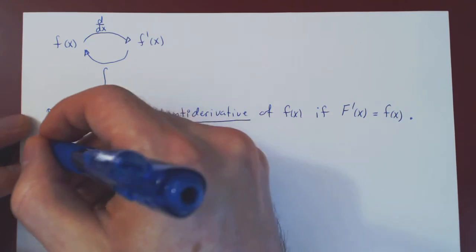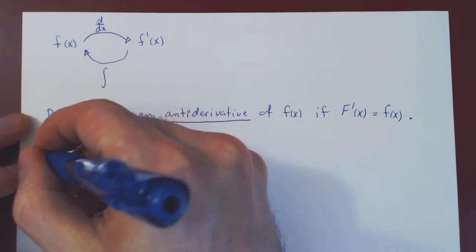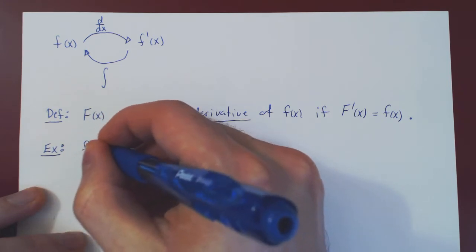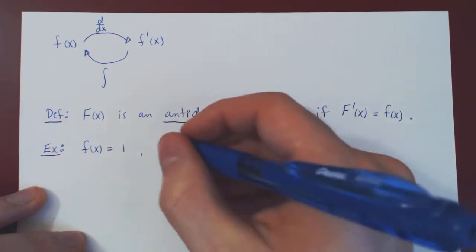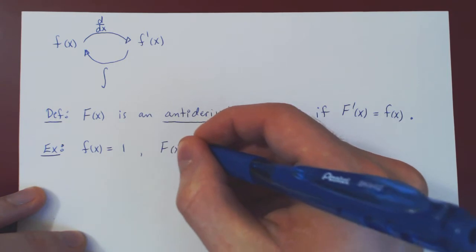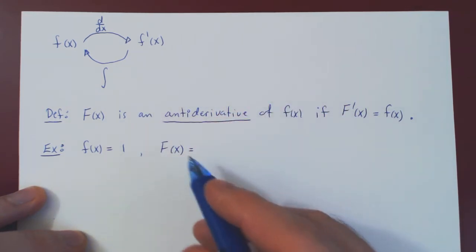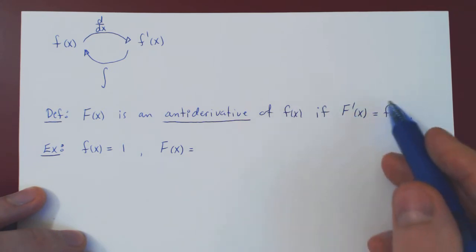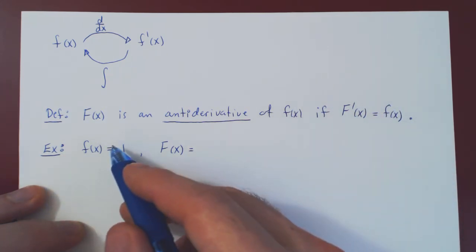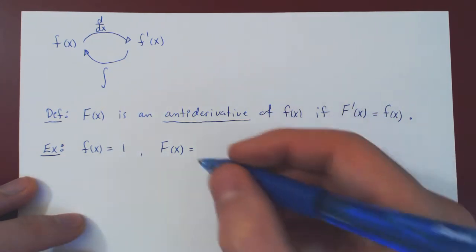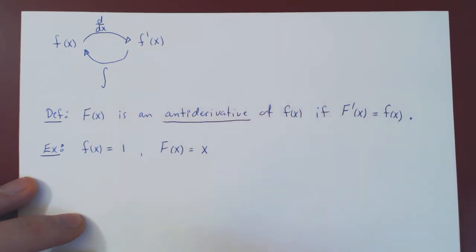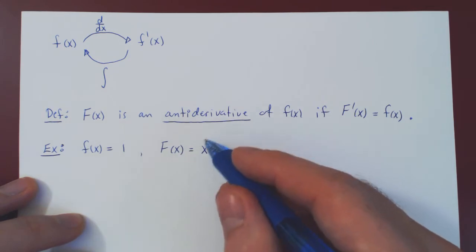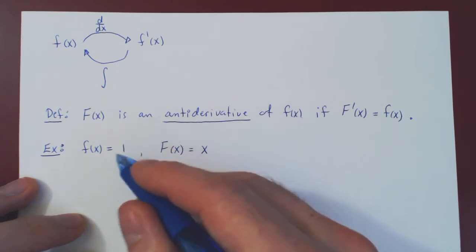Let's look at some examples. It's a very natural notion. Suppose that lowercase f equals one. Can we find an antiderivative of one? We need a function whose derivative is the original function. Do we know a function whose derivative is one? Clearly, x. The derivative of x is one, and so x is an antiderivative of one.